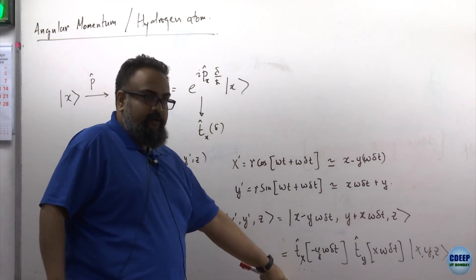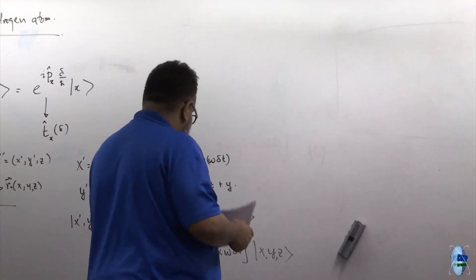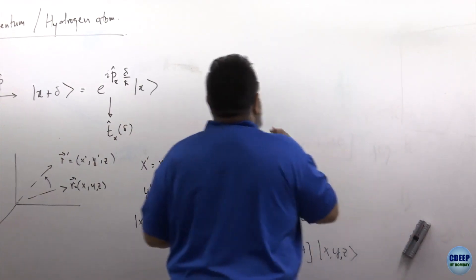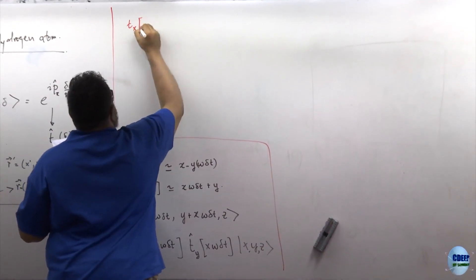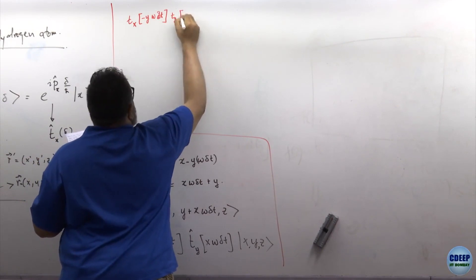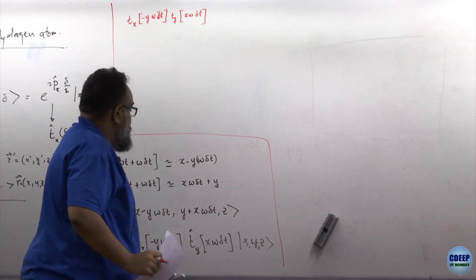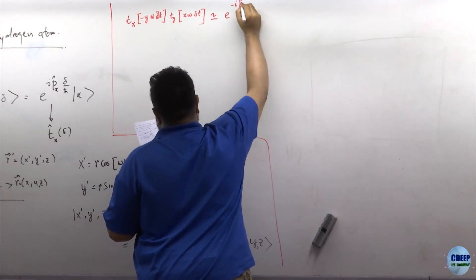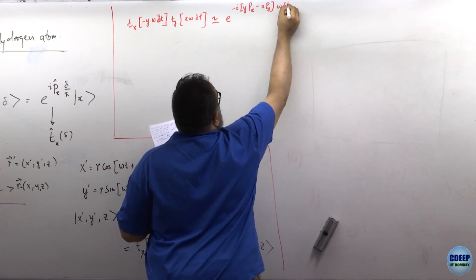So I can write this vector x', y', z as a translation along the x direction by an amount minus y·omega·delta·t, and a translation along the y direction by an amount x·omega·delta·t, acting on x, y, z. I am building off of that translation operator. And now it becomes very clear what's going to happen, because these operators don't commute.